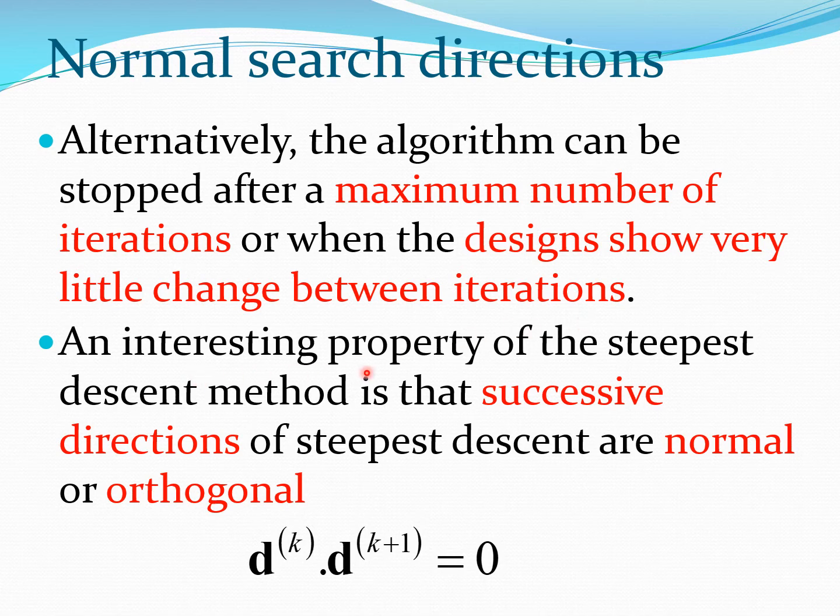Now one interesting property of the steepest descent method is that successive directions of steepest descent are normal or orthogonal. So this means that d^k dot d^(k+1) equals 0. Remember these are successive directions—the kth and the k plus 1th direction—and the dot product of these two vectors is 0, therefore these vectors are normal.